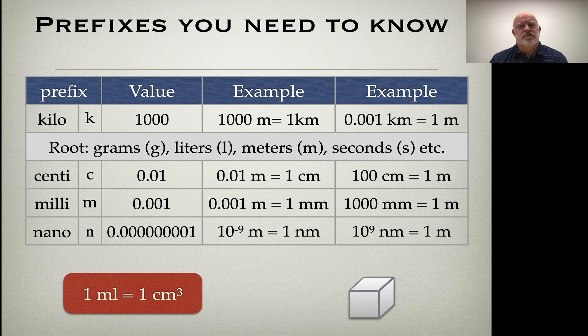Now in our class, there are certain prefixes that you really should just know. I want to take a look at those as we go through. There's not very many: kilo, centi, milli, and nano are really the only four that we really need to know. Notice how most of them are smaller than our root. So our root is the beginning or the standard one: a gram, a liter, a meter, a second. The prefixes are used anytime you come off the root.